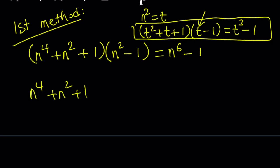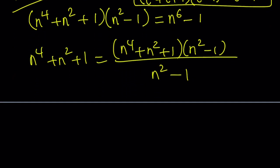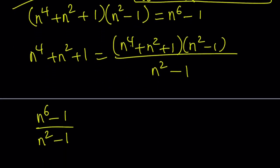We're going to start off with this expression and multiply it by n squared minus 1 and divide by the same thing, so now it's balanced. Note that n should not equal 1 or negative 1 — if n equals 1 this expression is undefined, but you'll see what happens. By multiplication we get n to the sixth power minus 1 divided by n squared minus 1, and this equals P, our prime number.